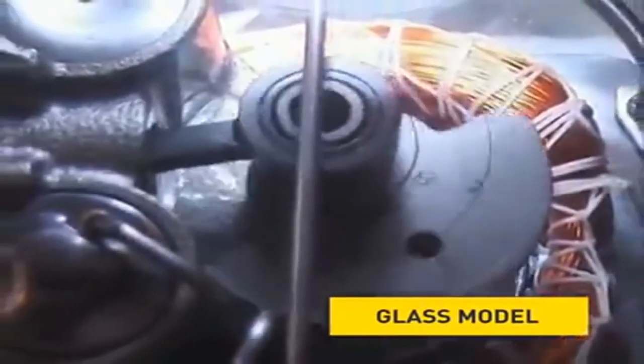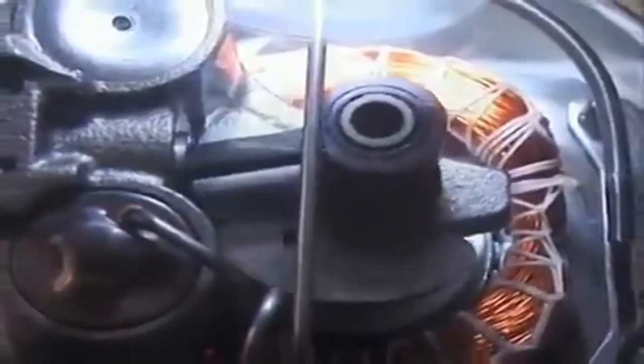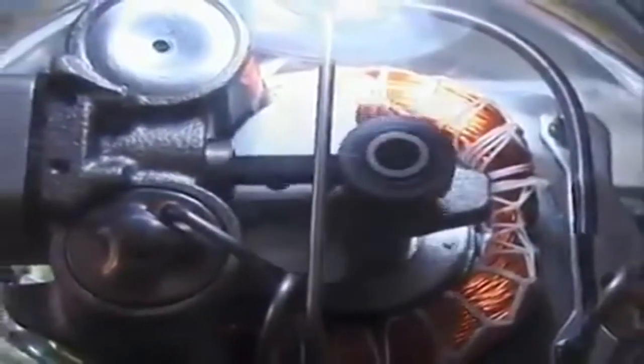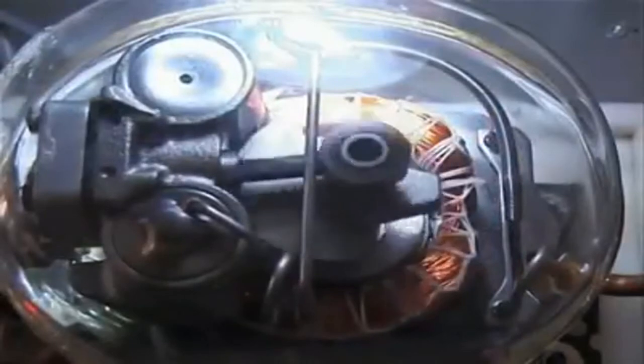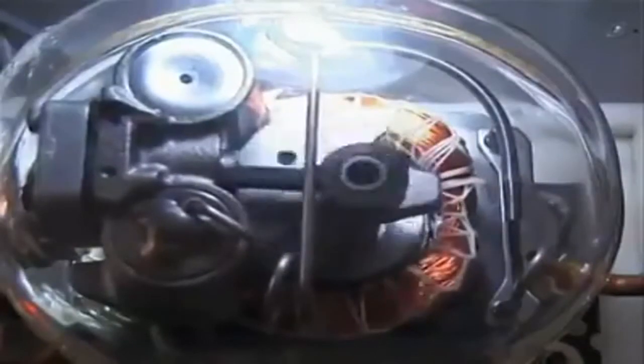The glass model clearly shows how the compressor functions. The compressor pumps the refrigerant through the refrigerating circuit with about 3,000 revolutions per minute.